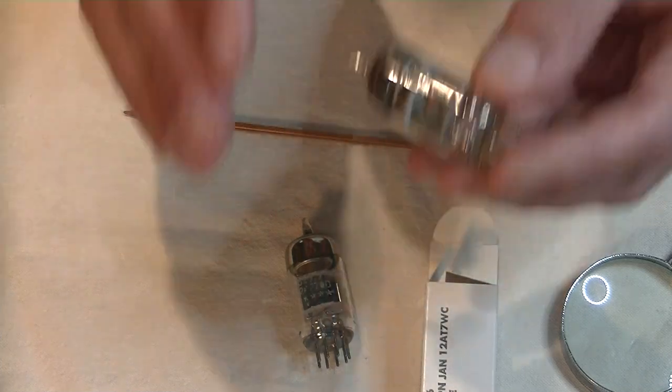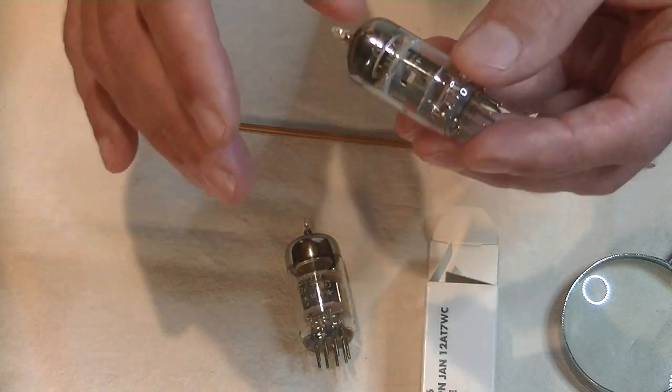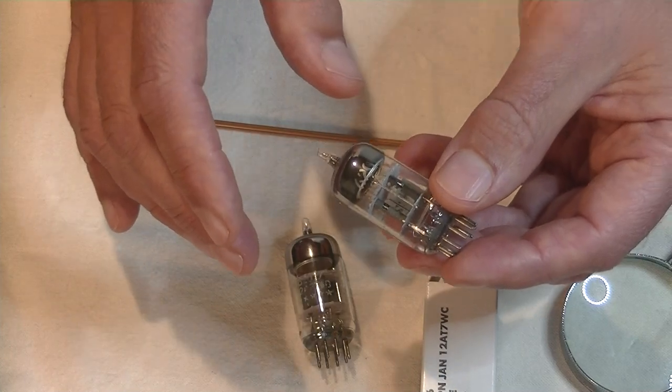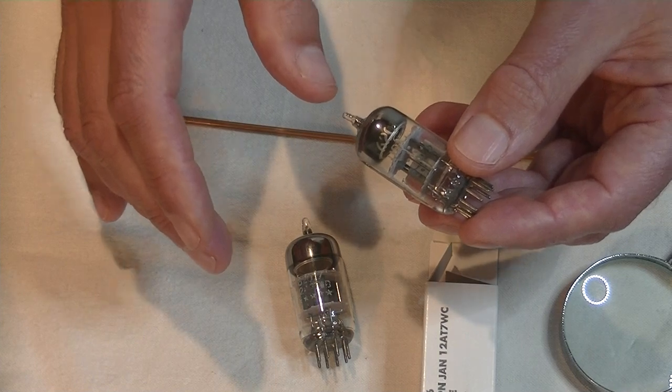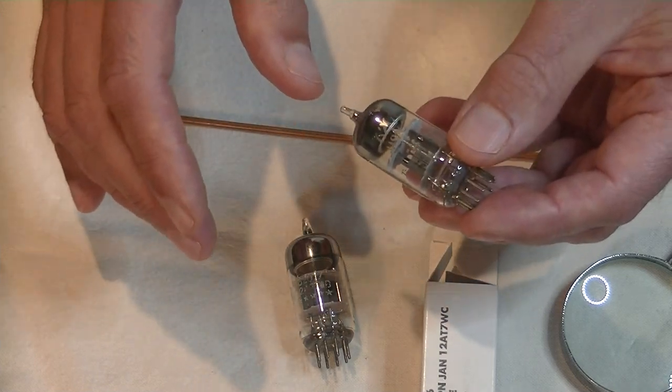Everything I said about the previous GE, WB, applies to this tube, which isn't surprising, as they are almost identical. Without the WC code, they'd be hard, if not impossible, to tell apart.